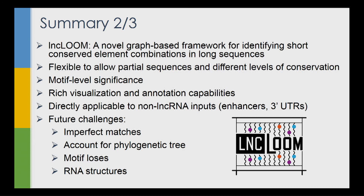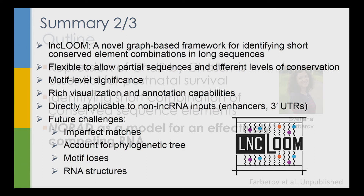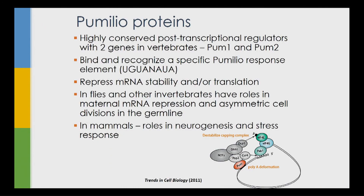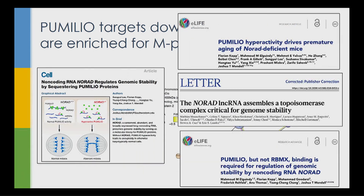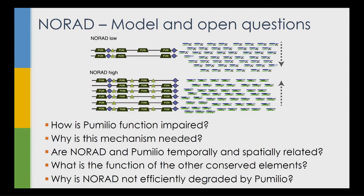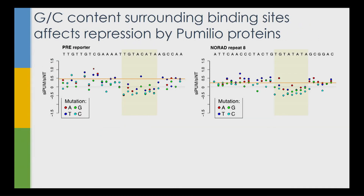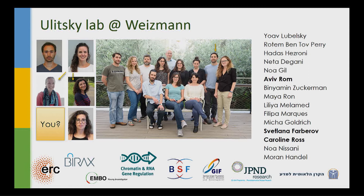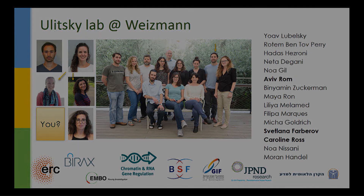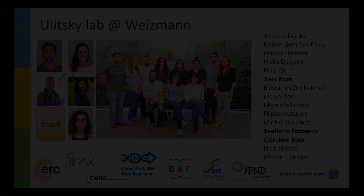We have a new framework — LinKloom — and if you're interested in trying it, you're welcome to contact us. It allows us to identify combinations of short conserved sequence elements in deeply conserved RNAs, which can be a very useful gateway for zooming in on specific short elements likely to be functionally important. These are the people who did the work — the first part was done by Aviv, a PhD student, and LinKloom was developed by Caroline. We're always looking for more people. Happy to take questions.